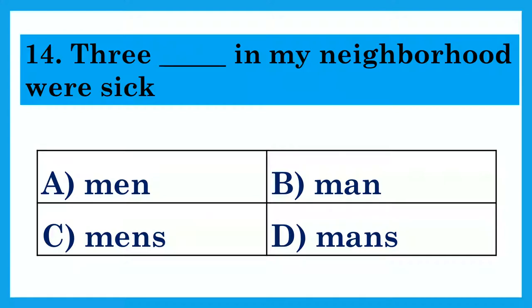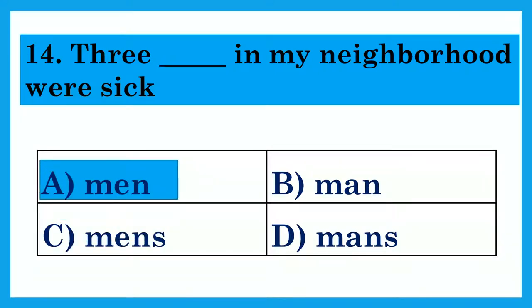Three dash in my neighborhood were sick. Option A: Men. Option B: Man. Option C: Mens. Option D: Mans. The answer is Option A: Men — Three men in my neighborhood were sick.